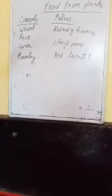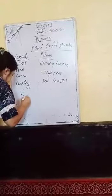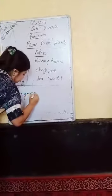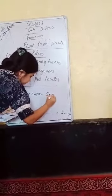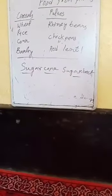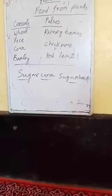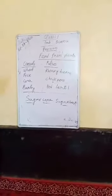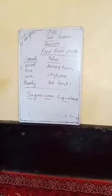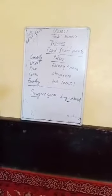We get sugar from some plants. Sugar makes our food sweet. These plants are like sugarcane and sugar beet. We also get oil from some plants — we cook food in oil. These include groundnuts, mustard seeds, and sunflower seeds. We get oil from these seeds.